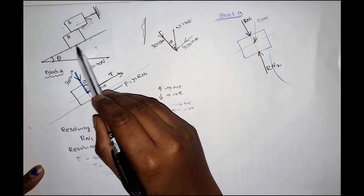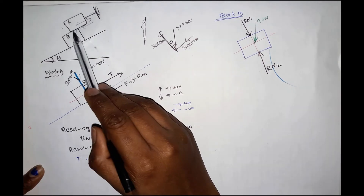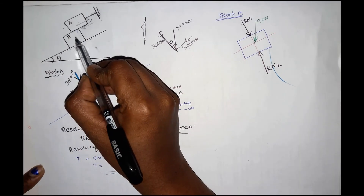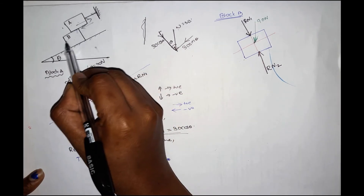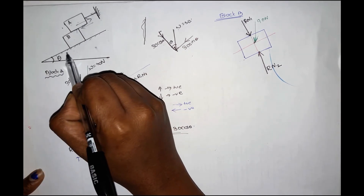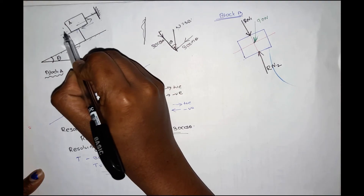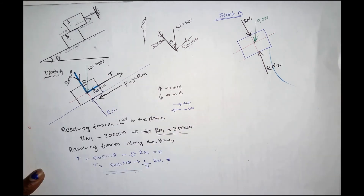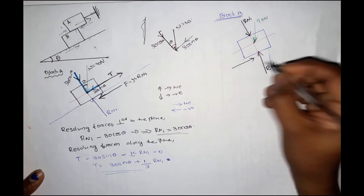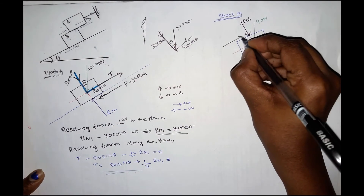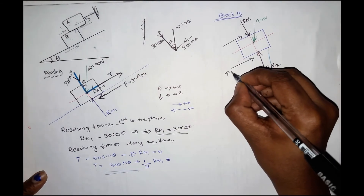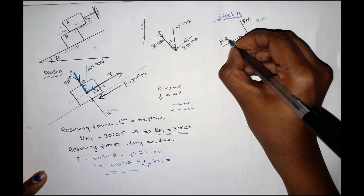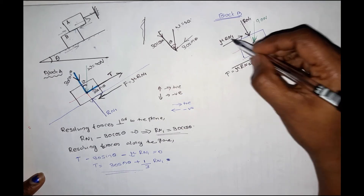Block B has two contact surfaces. For each surface, there is a friction force. The block tends to move down the plane, so friction opposes that motion and acts upward along the plane. The friction force is mu into Rn for each surface. All forces are now marked on block B.